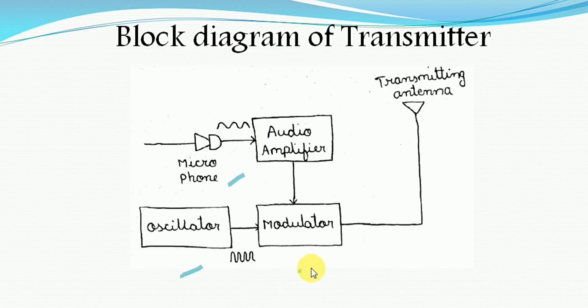Now let us see the important block involved in the transmitter section, that is a modulator. Here the message signal and carrier signal both are applied to the modulator. Therefore the message signal is superimposed on the carrier signal in a suitable manner. The resulting signal we call a modulated signal and the process we call modulation. We have seen different types of modulation: amplitude modulation, angle modulation, pulse modulation and so on. Depending on the application type we have to design the modulator section. Thereafter the modulated signal is passed through the channel using the transmitting antenna.